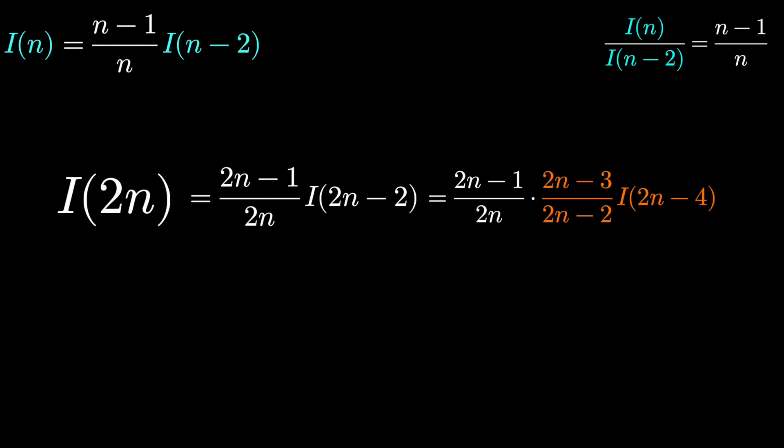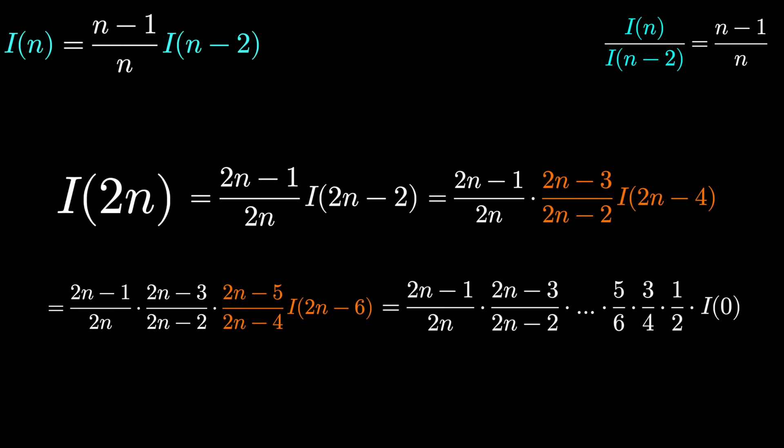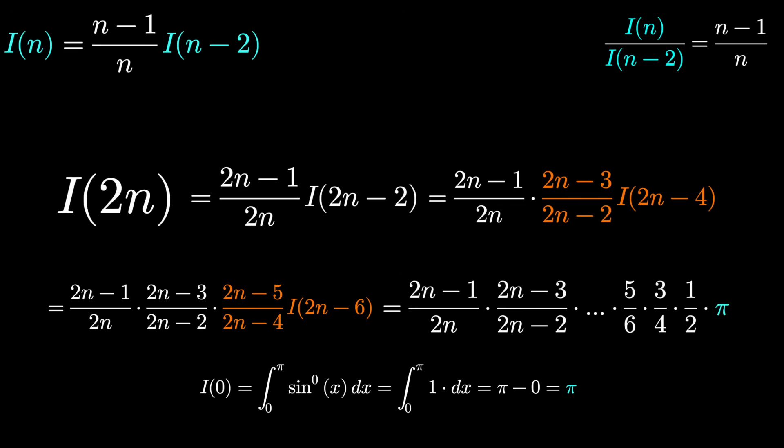And we could do this over and over again. The next recursion would be (2n-5)/(2n-4) times I(2n-6). And this would happen all the way down until 5/6 times 3/4 times 1/2 times I(0). Now we can quickly calculate I(0), just the definite integral from 0 to pi of sin^0 which is 1. This just comes out to be pi. And so I(2n) is pi times the product (2k-1)/(2k), where k varies from 1 to n.